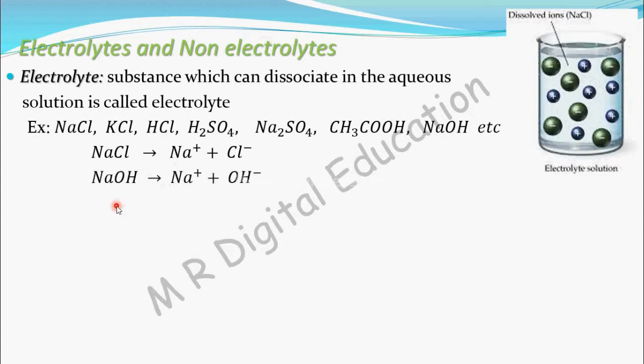Take one more example: if you put NaOH, it will also dissociate into Na⁺ and OH⁻ ions. H2SO4 will dissociate into 2H⁺ ions and SO4²⁻ ions. Like that, electrolytes will dissociate into ions in the solution — positive and negative ions will be present.